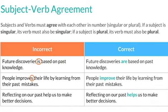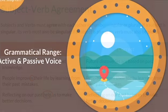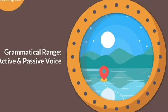Here's our last example. Incorrect: 'Reflecting on our past help us to make better decisions.' The subject 'reflecting on our past' is singular, whereas the verb 'help' is plural. To correct this, we change 'help' to 'helps'. The correct sentence reads: 'Reflecting on our past helps us to make better decisions.' That's it for this video — I'll see you in the next grammar section, where we'll talk about active versus the passive voice.